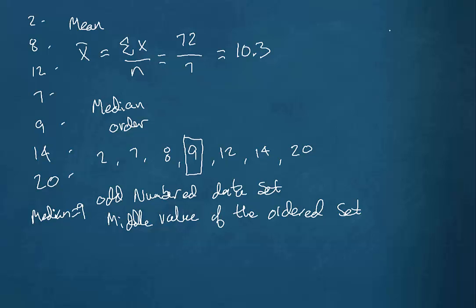But let's suppose that we had one more data value in there. So let's take that set, 2, 7, 8, 9, 12, 14, 20, and let's say 22. Let's throw 22 in the group. Well, now we have an even numbered data set.